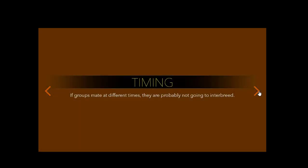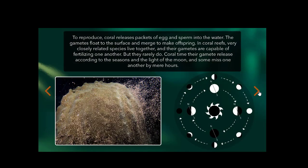If groups mate at different times, they're probably not going to interbreed. To reproduce, coral releases packets of egg and sperm into the water. The gametes float to the surface and merge to make offspring.